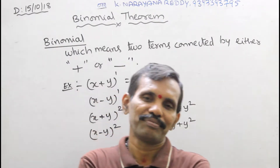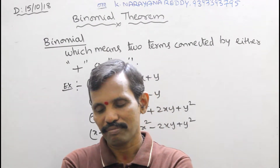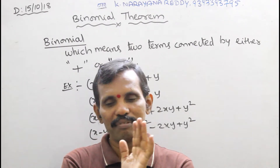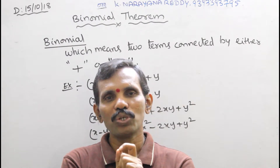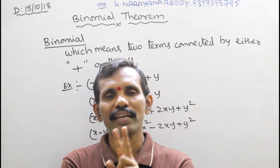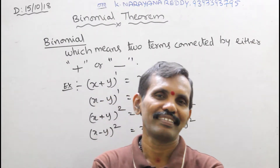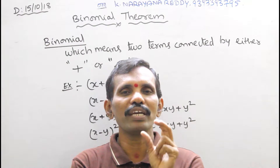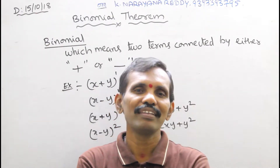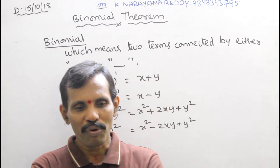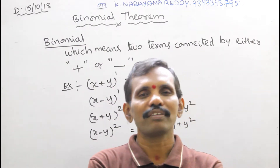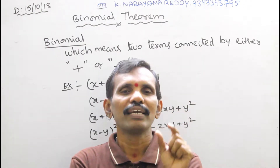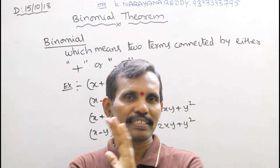Here one important point you have to observe: Binomial is not a scientist's name. It is not a mathematician's name. It is only about using two operators — plus or minus. That is why this is called binomial. You can form an expression by using these two operators; it is called binomial theorem. Binomial is not a mathematician's name or scientist's name.